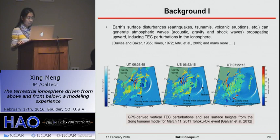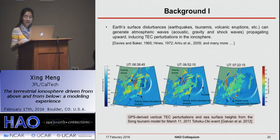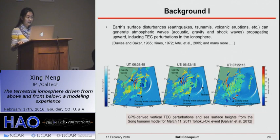Earth's surface disturbances — earthquakes, tsunamis, and volcanic eruptions — can generate atmospheric waves if the magnitude is large enough, and those waves propagate upward, inducing TEC perturbations in the ionosphere. The physics: a ground disturbance at Earth's surface or ocean surface perturbs the neutral atmosphere just above, causing atmospheric acoustic and gravity waves. Because neutral density decreases exponentially with height, wave amplitude must increase with height to conserve energy. This means a small perturbation of just a few centimeters at the Earth's surface can generate TEC perturbations observable in the ionosphere.